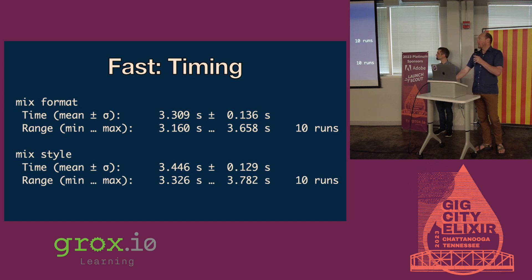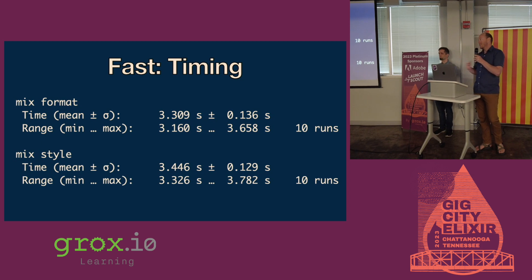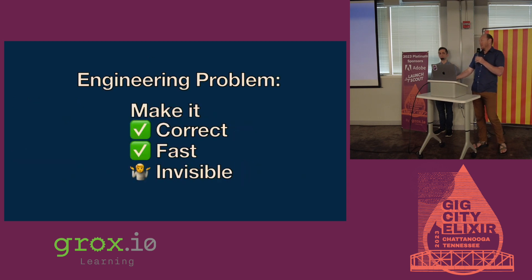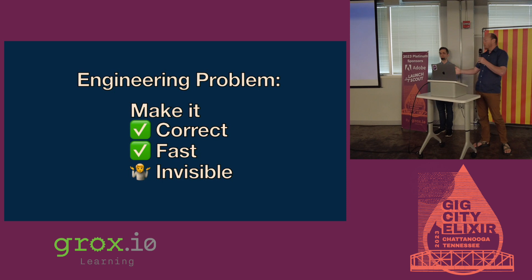The problem here is we have a new command that's not part of the workflow. So maybe it's fast enough that people will run it — whereas Credo takes too long — but we have to teach people about a new tool. We need to not do that. We're fast, but we're not yet invisible. How do we make it invisible?